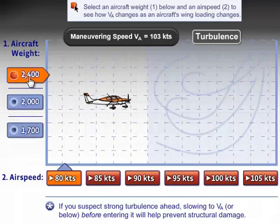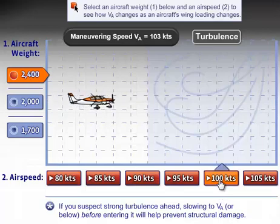So if we take 2,400 pounds and fly the aircraft all the way up to 100 knots, it's going to be fine until we exceed maneuvering speed, at which time we'll get structural damage as we enter turbulence.